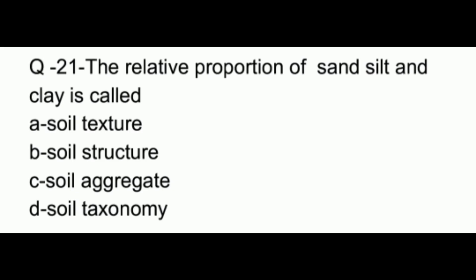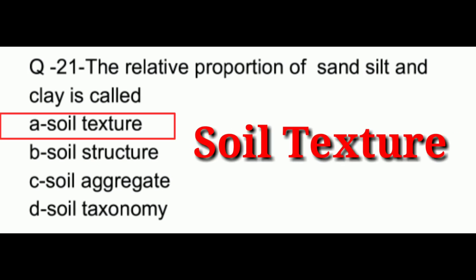Question number 21. The relative proportion of sand, silt, and clay is called: option A, soil texture; option B, soil structure; option C, soil aggregate; option D, soil taxonomy. The answer to this question is option A, which is soil texture.